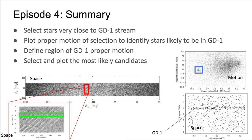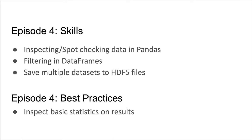Since these stars belong to a cluster that is being stretched into a stream, we expect them to only be moving along the stream in the phi1 direction and to have very little proper motion in the phi2 direction. The blue box shows an anomalous density in proper motion of stars that have high phi1 proper motion and zero phi2 proper motion, exactly as we'd expect for GD1. Now that we have identified cuts in proper motion space, we can expand our analysis to the full red rectangular region and apply this filter. When we plot the candidates in physical space, the GD1 stream is visible for the first time. This episode introduces learners to techniques for inspecting and spot checking their data in Pandas, for filtering data frames, and for saving multiple data sets into an HDF5 file.